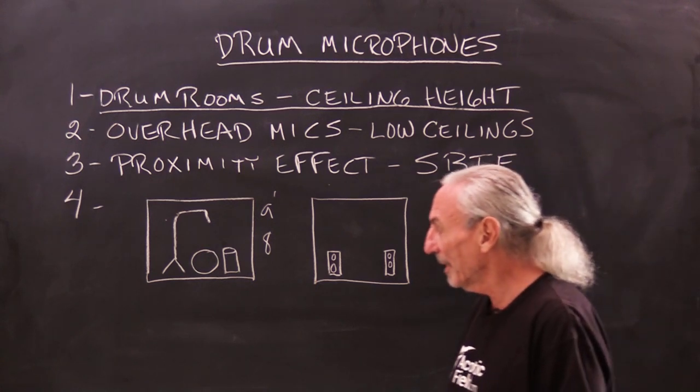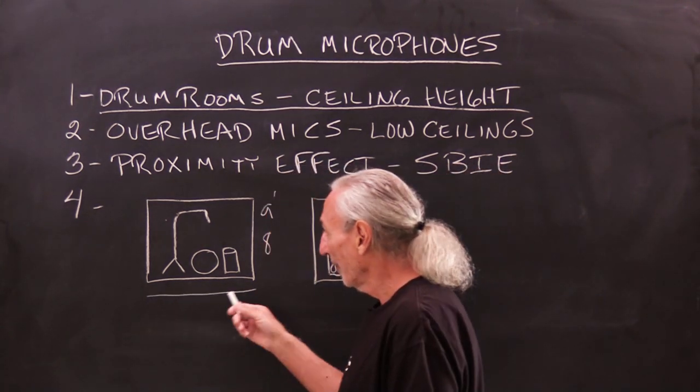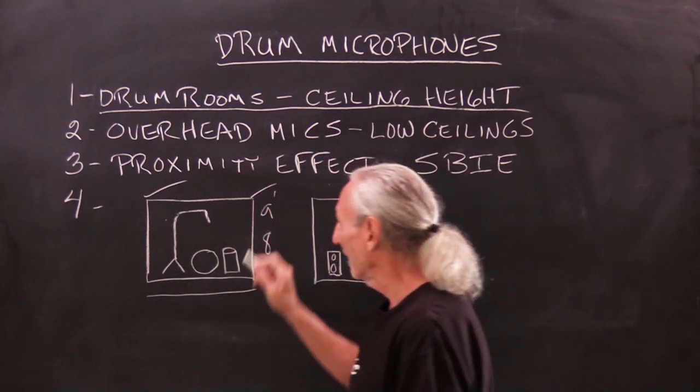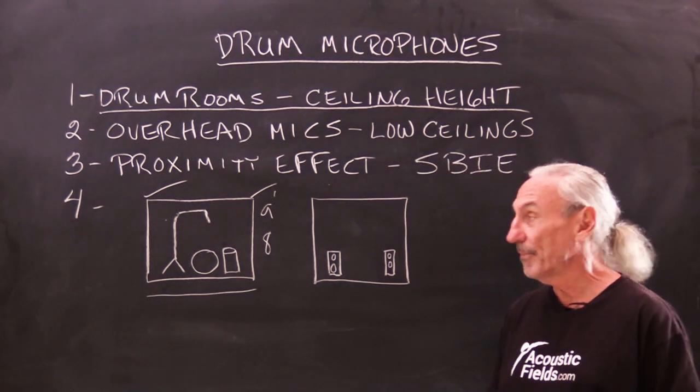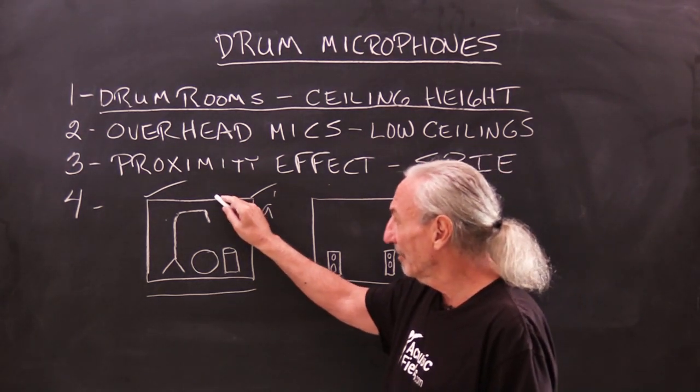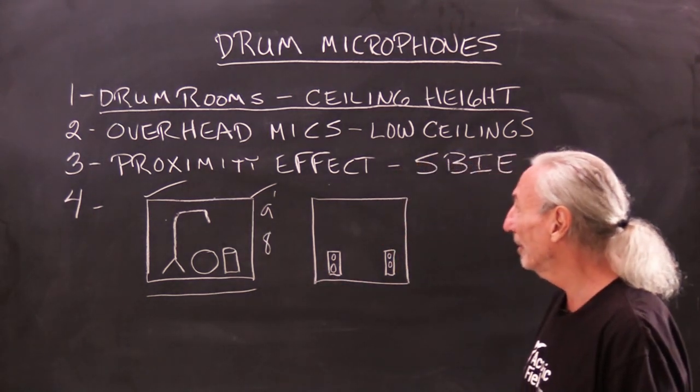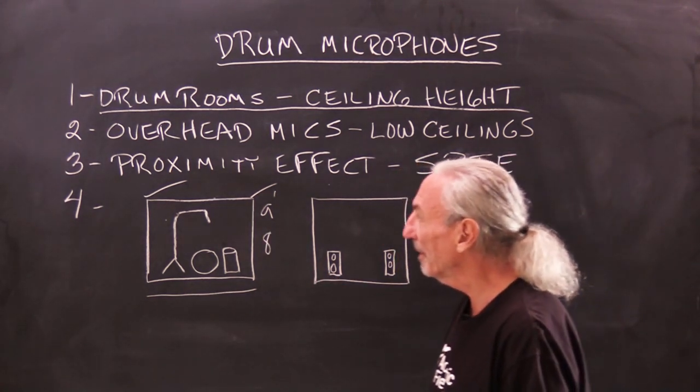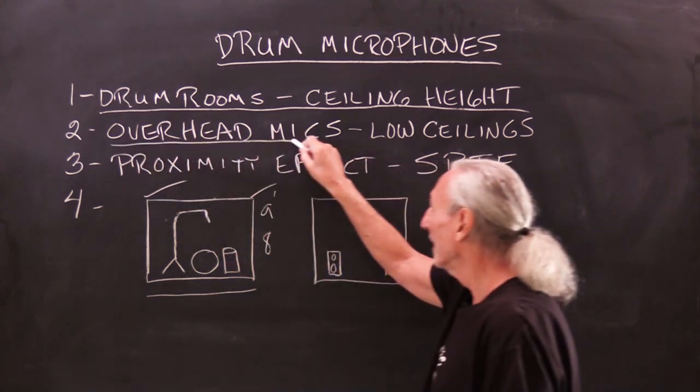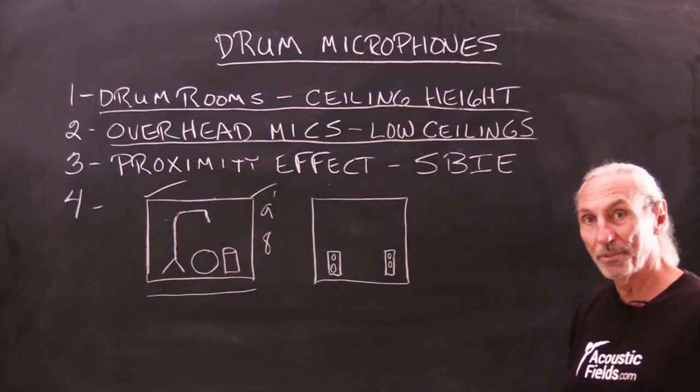You might be able to get away with a little less width and a little less length in the room if you have enough treatment, but this ceiling height is really critical. We have to be careful with our overhead mics as they get close to the ceiling height.